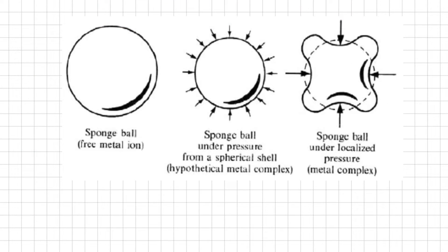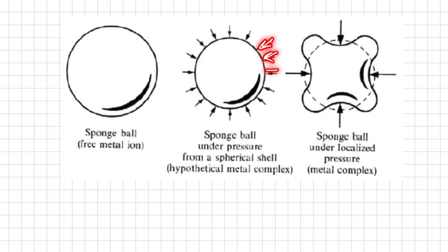Before going into the shapes of d orbitals, let's summarize all the postulates using an analogical diagram. In this diagram, the electronic cloud of the free metal ion is represented like a sponge ball. The arrows in this diagram represent ligands that are approaching towards the central metal atom or ion.